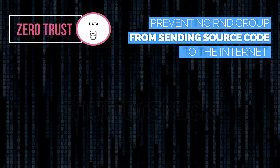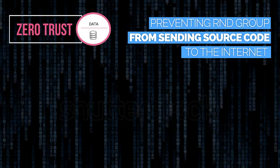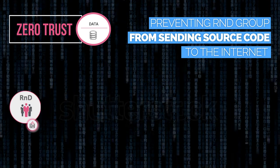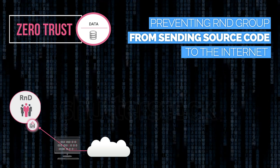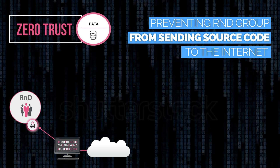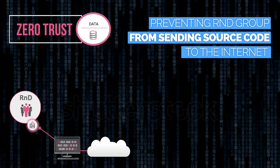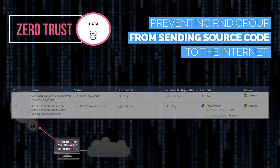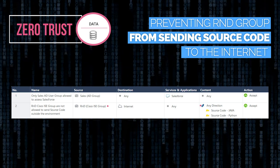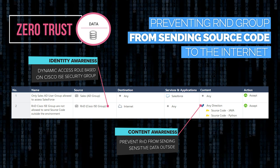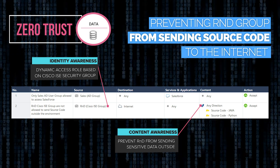Zero trust data is about tracking and protecting the organization's sensitive data wherever it is. Here we are preventing the R&D group from sending the company's source code to the internet. Checkpoint content awareness capabilities enable us to define the exact data types that the security rule applies to — in this case, Java and Python source code.